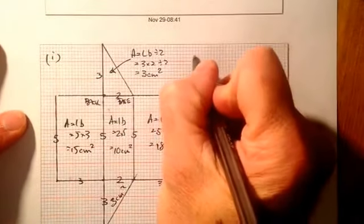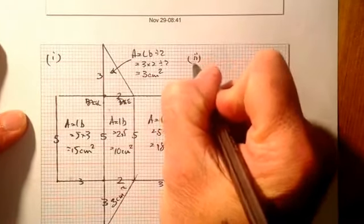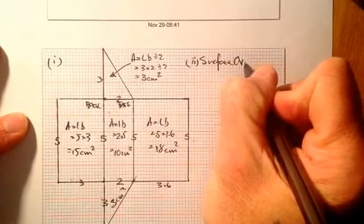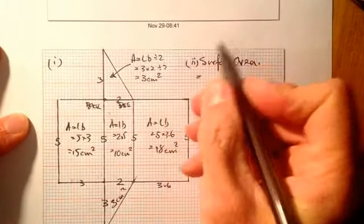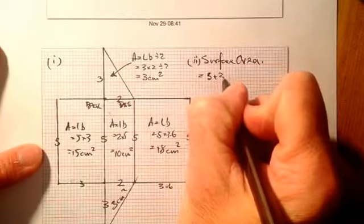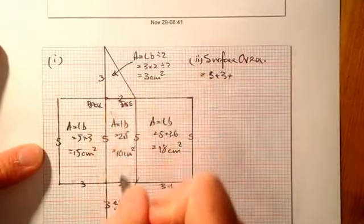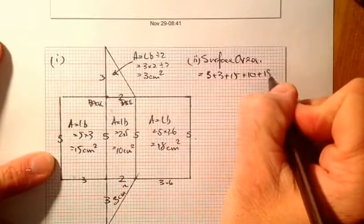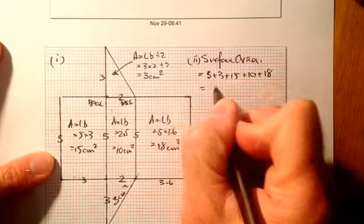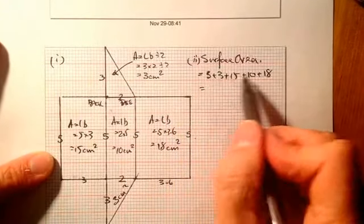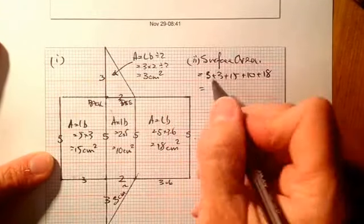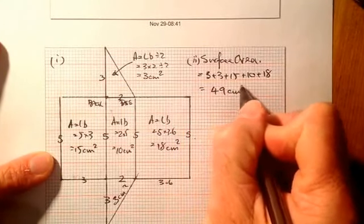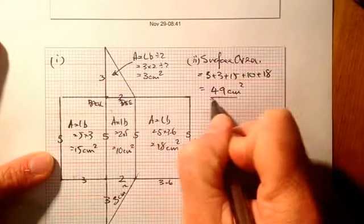I've got everything I need to work out my surface area. What we've got: three plus three, plus fifteen, plus ten, plus eighteen. That gives a total of 49 centimetres squared.